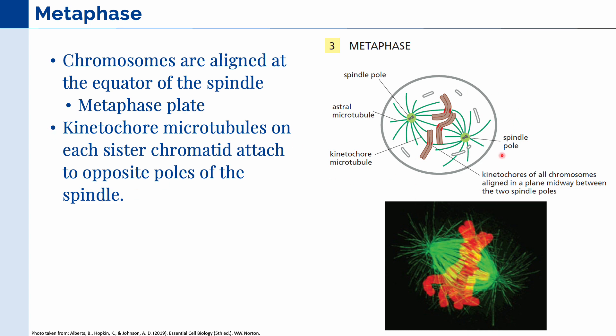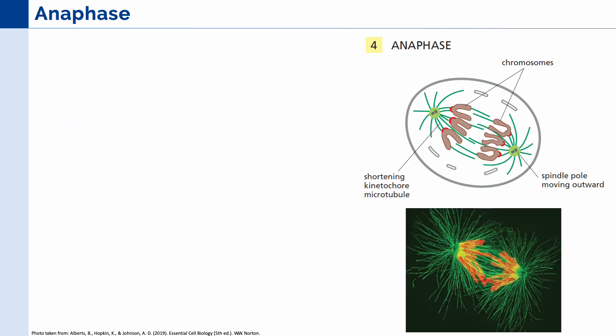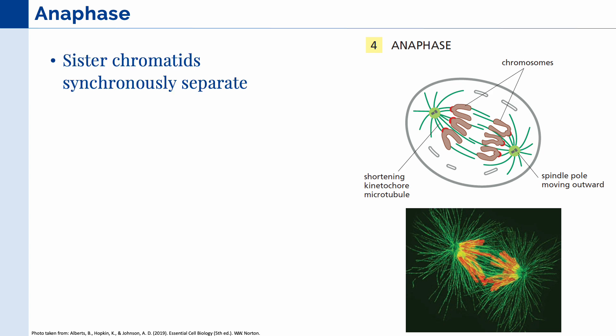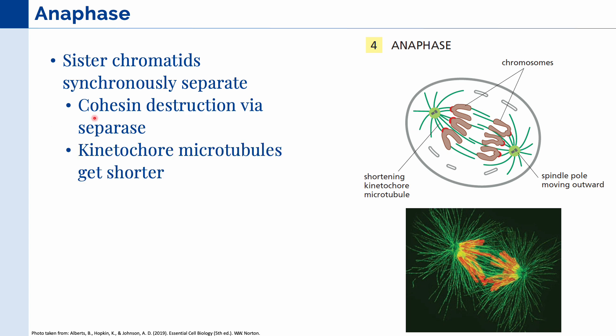Once all the chromosomes are aligned, the cell can then proceed to anaphase. In this stage, the sister chromatids synchronously separate. The first contributing event is cohesin destruction via the enzyme separase. Once these proteins have been destroyed, the kinetochore microtubules get shorter and start to pull apart the two sister chromatids, or chromosomes. At the same time, the spindle poles also move apart until they reach the opposite sides of the cell.